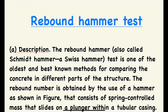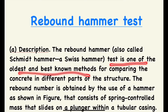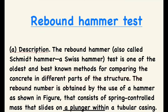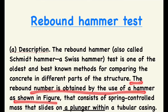The rebound hammer, also known as the Swiss hammer test, is one of the oldest and best known methods for comparing the concrete present in different parts of structures. The rebound number is obtained by the use of a hammer that consists of a spring-controlled mass.